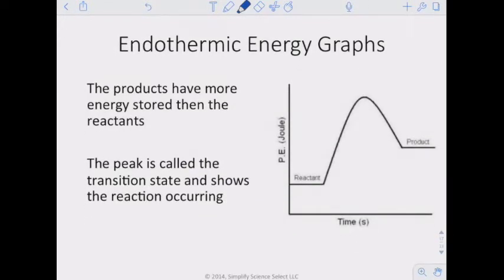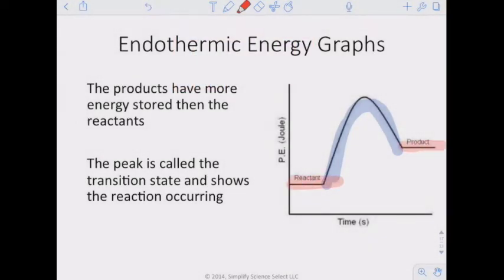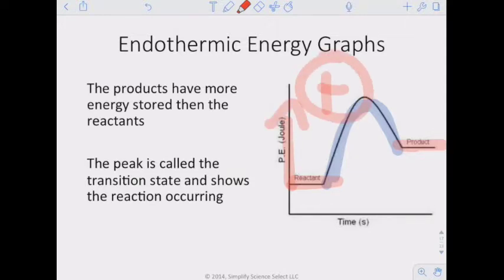On an endothermic energy graph, the products have more energy stored than the reactants. The peak is called the transition state and shows the reaction occurring. You know it's endothermic because reactants start lower and products end higher — the graph goes up. If it goes up, that's a positive number, meaning energy went in — positive means energy was absorbed.